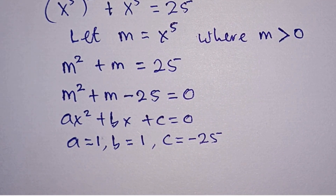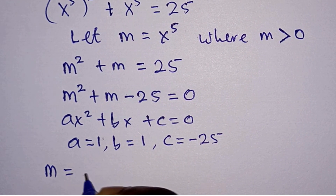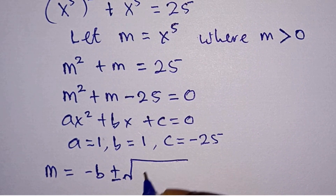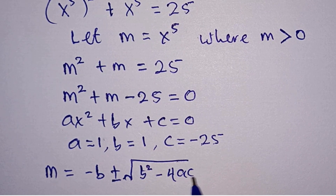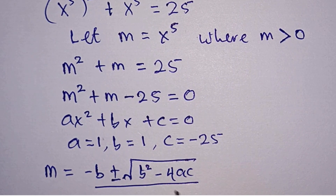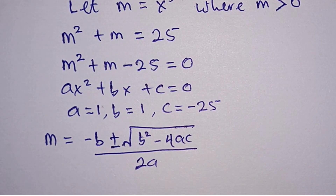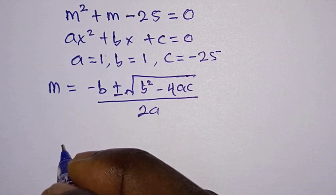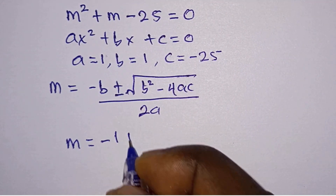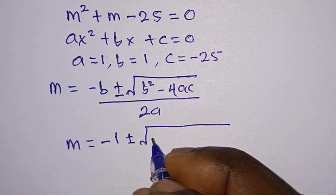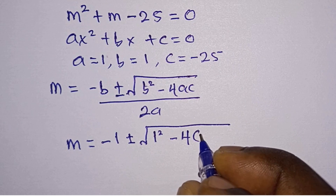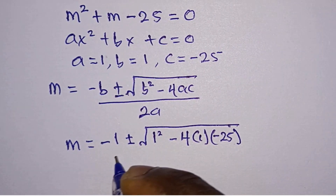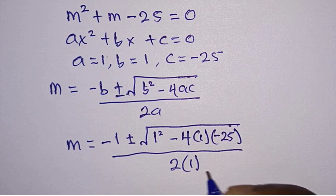So let's go ahead and use the quadratic formula, which is m equals negative b plus or minus square root of b squared minus 4ac, all divided by 2a. Plugging in our values, we have m equals negative 1 plus or minus square root of 1 squared minus 4 times 1 times negative 25, all divided by 2 times 1.